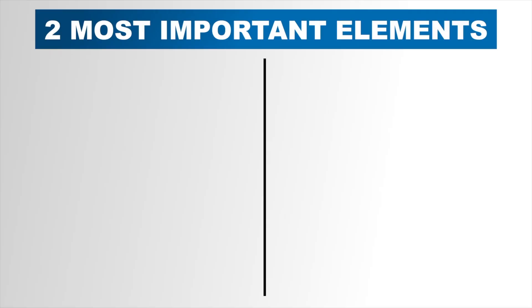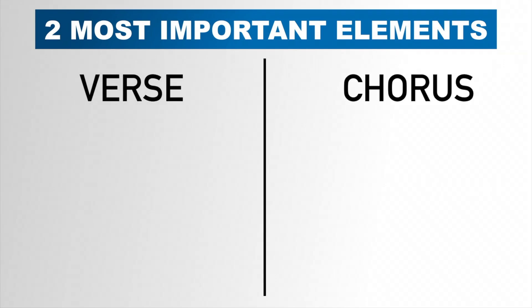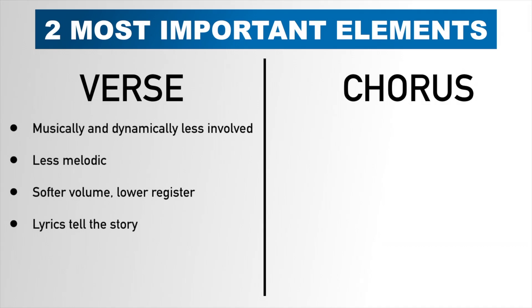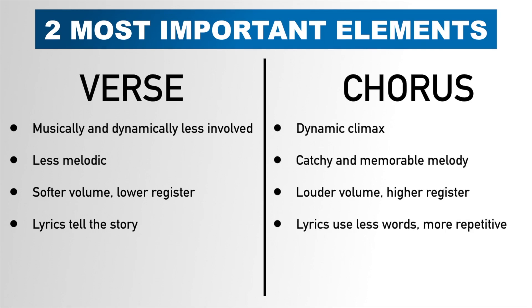To understand why certain song forms work and others don't, we really have to figure out what the ultimate purpose of those sections are. In virtually every song put out in the last 80 years, you'll always have these two sections: the verse and the chorus. The verse is musically and dynamically less involved — it's usually less melodic, using only a couple of notes, sung at a softer volume and at a lower register, and the lyrics are pretty much there just to tell the story. The chorus, on the other hand, is the dynamic climax of the song — it has a catchy and memorable melody, is usually sung at a louder volume and at a higher register, and the lyrics use fewer words and favor repetition. There's a sharp and distinct difference between these two sections, and it's this contrast that makes them so important.